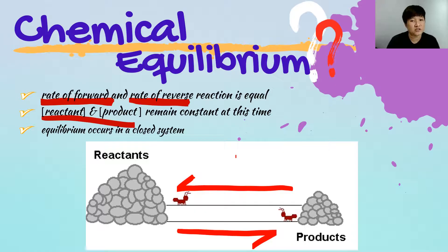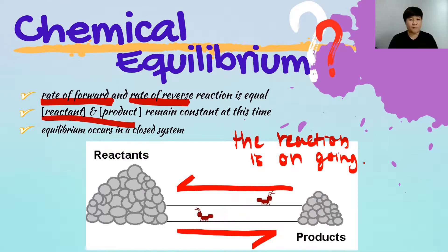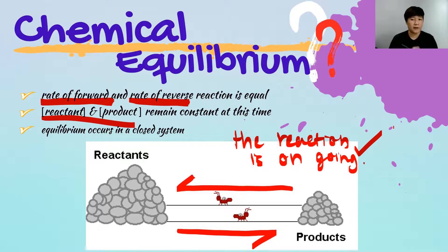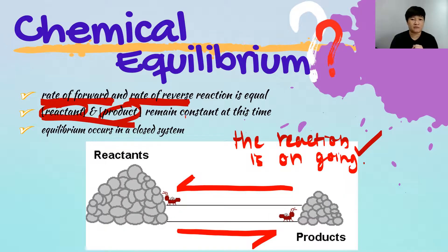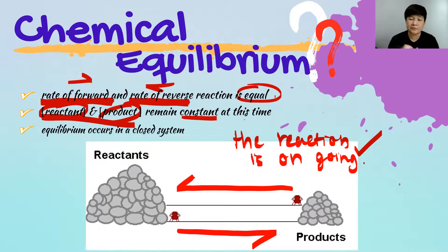Does the reaction stop when equilibrium is reached? No — the reaction is still ongoing. There are no changes we can observe because we have achieved chemical equilibrium, but the reaction doesn't stop. The concentration of the reactant and product remains constant because the rate of the forward reaction and the rate of the reverse reaction are now equal.